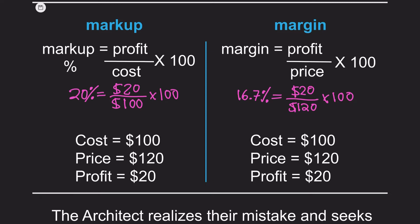The next variable is price, which is the retail price of the product or service. In architecture, this is the final billable hourly rate of $120. $120 minus $100 equals $20 of profit. For every hour the architect works, they make a $20 profit. Let's analyze what these same numbers mean from a markup perspective and from a margin perspective.